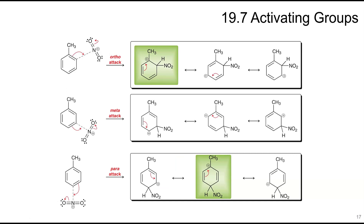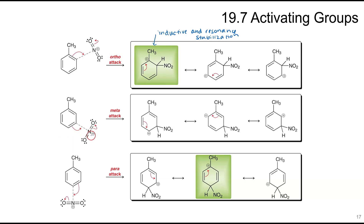Looking at the mechanism, electrons from the benzene ring next to the CH₃ group attack the incoming electrophile, forming a carbocation. This carbocation can be stabilized by resonance, and the positive charge on the carbon adjacent to the alkyl group can be stabilized inductively. When the CH₃ is in the meta position, the methyl group can never donate its electrons inductively to stabilize the carbocation because it doesn't reach that specific carbon — it skips one. So meta attack is not preferred.